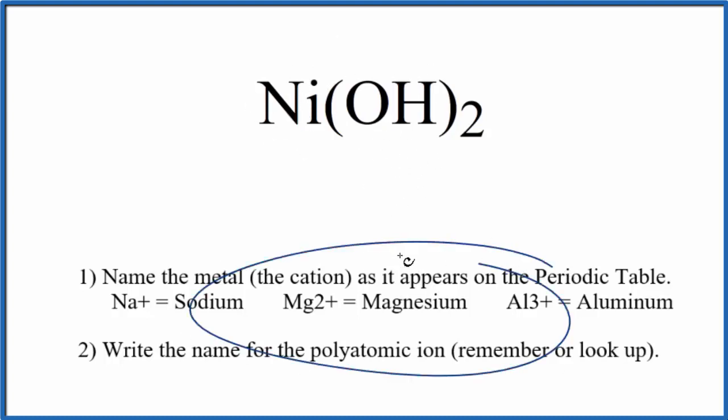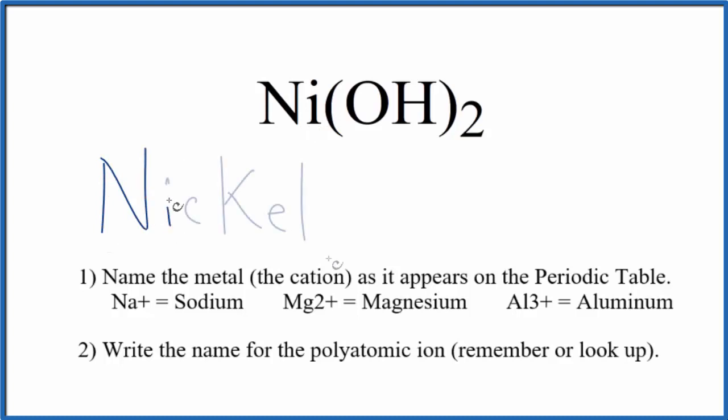So we use these rules here to write the name for Ni(OH)₂. First we name the metal. That's Ni, which is nickel. Next we write the name of the polyatomic ion. That's the OH. That's our hydroxide, lowercase h. So the name right now for Ni(OH)₂ is just nickel hydroxide.